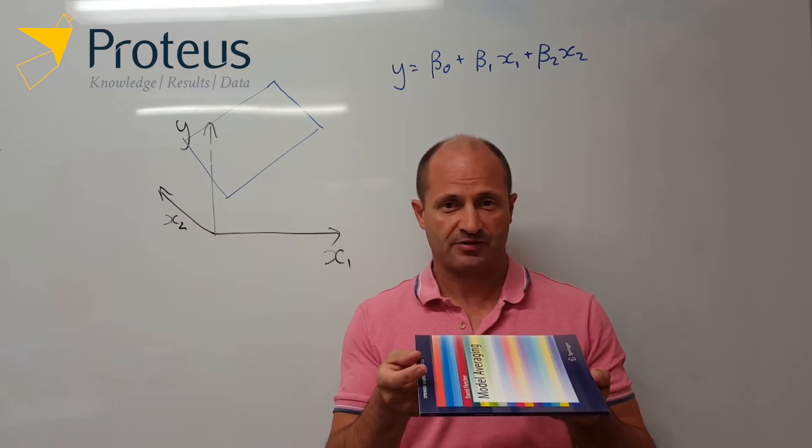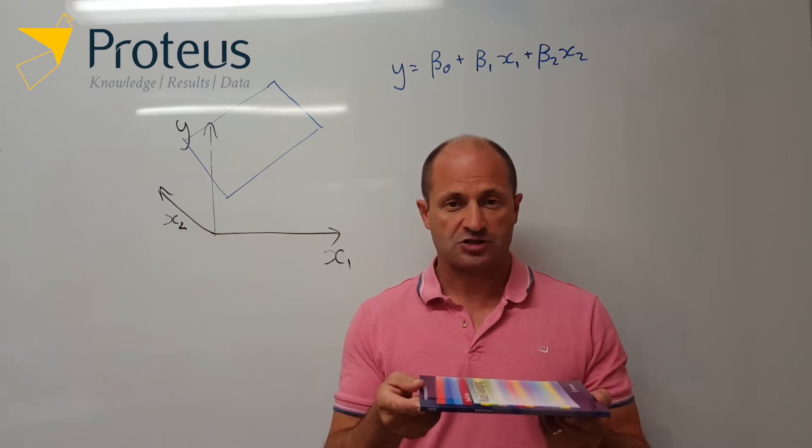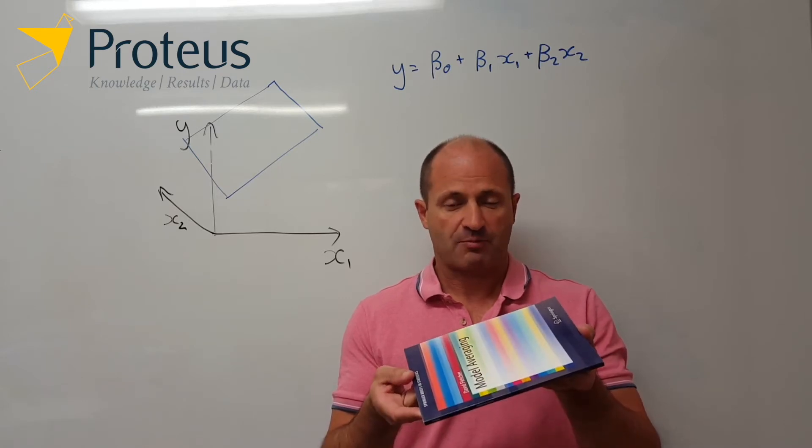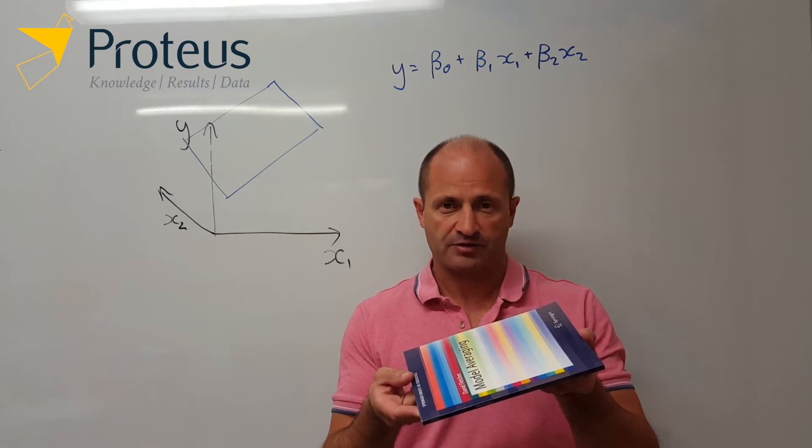If x2 has a relationship but x1 doesn't, then we've got the book tipped in the other angle. And then if x1 and x2 both have an effect on our response, we've got our plane on the angle in both dimensions.